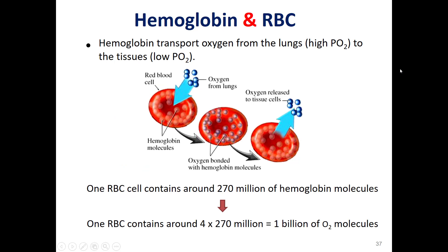As we see in this slide, hemoglobin in the RBC — we have a high concentration of oxygen in the lungs, which is transferred by the blood to the tissues where there is a low percentage or low partial pressure of oxygen. The majority of the oxygen is transferred through the RBC.